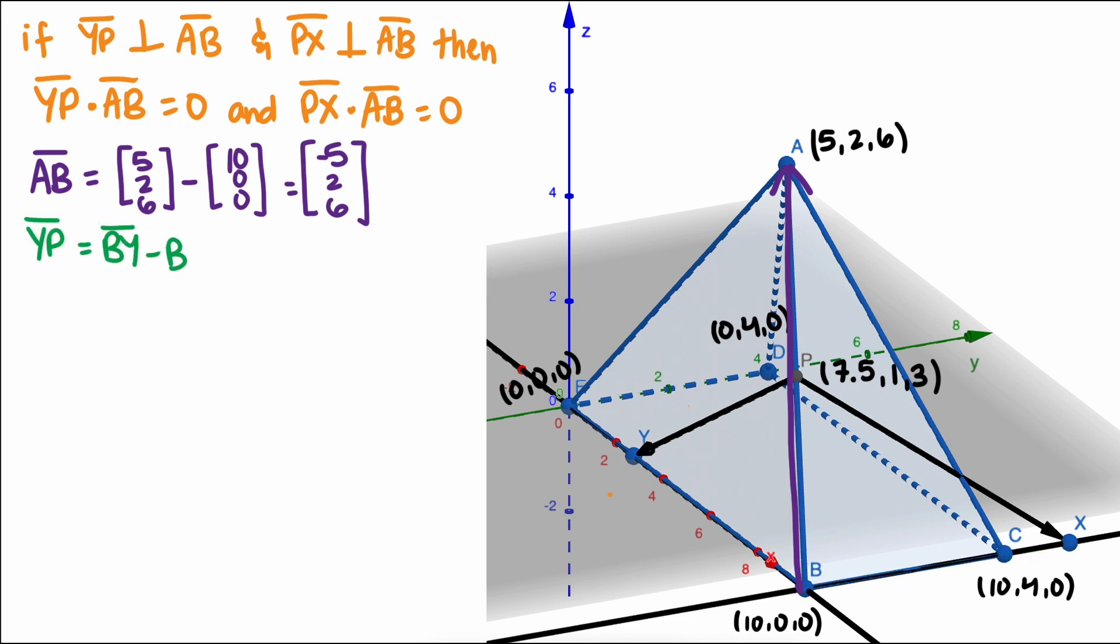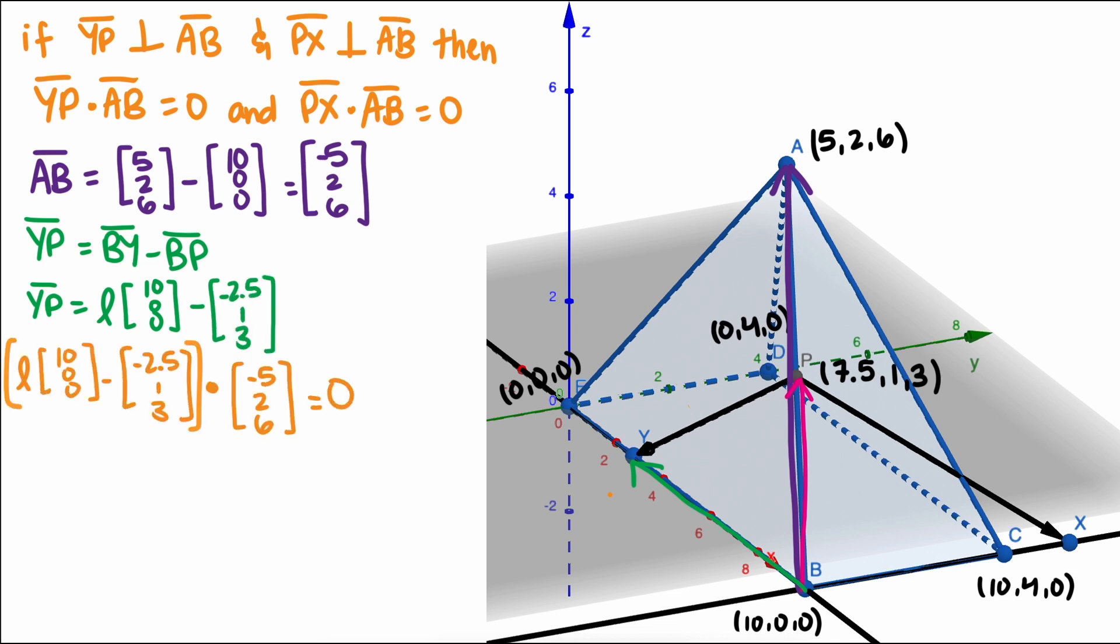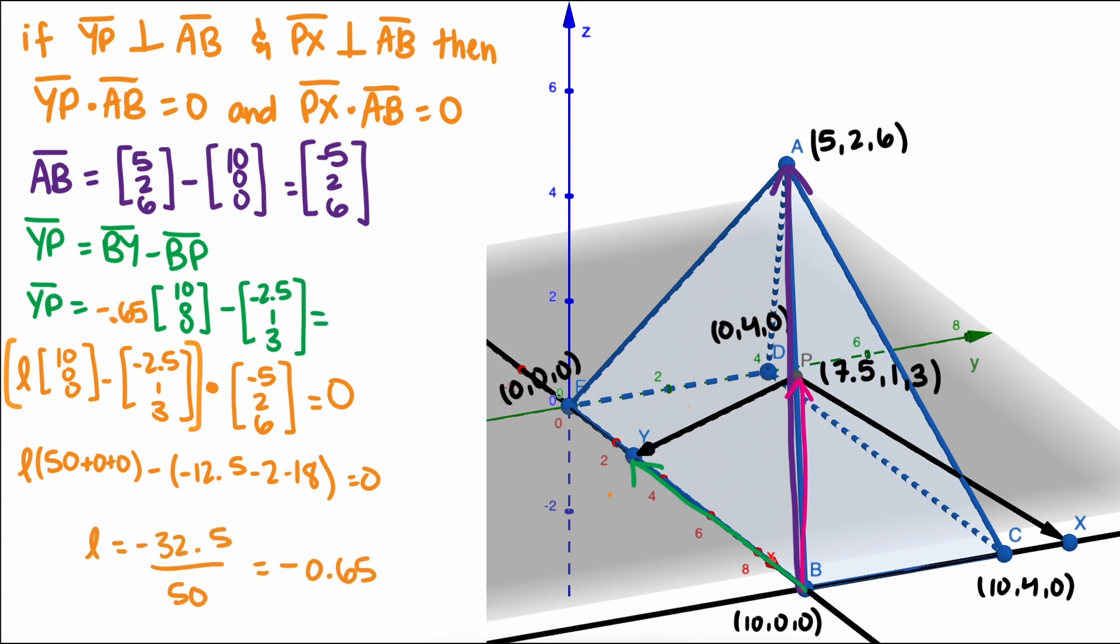We can do the same process to find YP. I'll just show the work here quickly, but feel free to pause at the end and look over it if you want to. We end up with L equals negative 0.65, which means YP is negative 4, negative 1, negative 3.